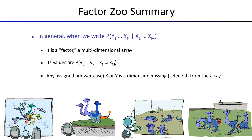In summary, when reasoning about factors, the key questions are: how many numbers does it take to represent the table, and what subsets sum to one? The number of dimensions equals the number of capital-letter variables, so the size is exponential in that count. Keep that quantity small during inference.